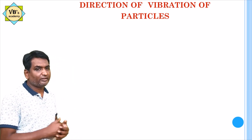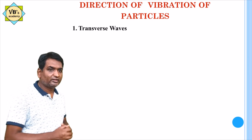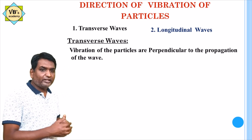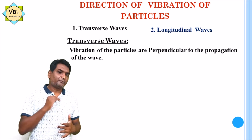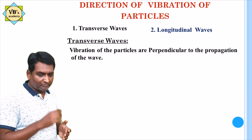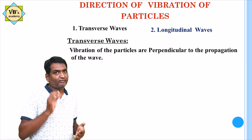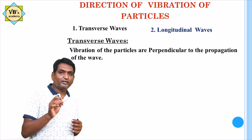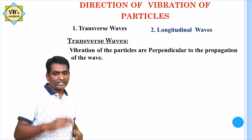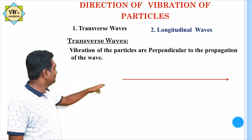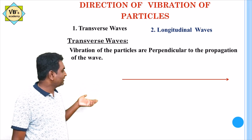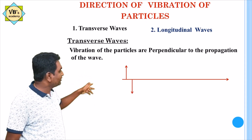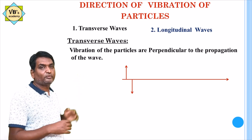Based on the direction of vibration of particles, waves are classified into transverse waves and longitudinal waves. In transverse waves, the vibration of the particles is perpendicular to the propagation of the wave. We consider two directions: first, vibration of the particles, and second, propagation of the wave. If these two directions are perpendicular to each other, such waves are called transverse waves.